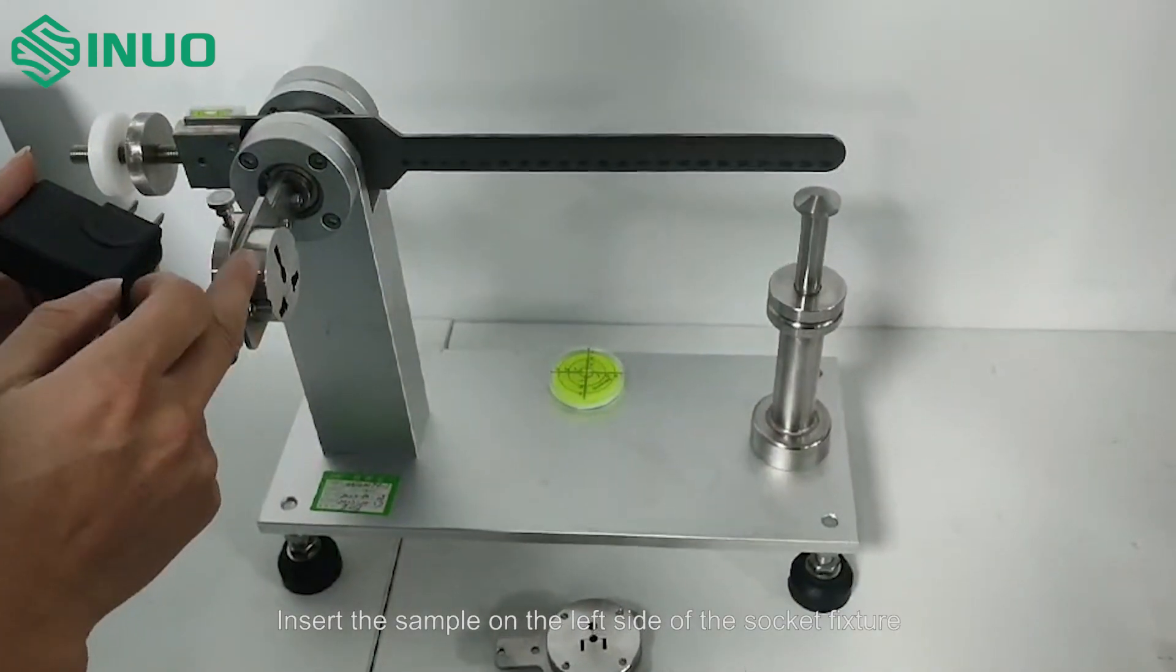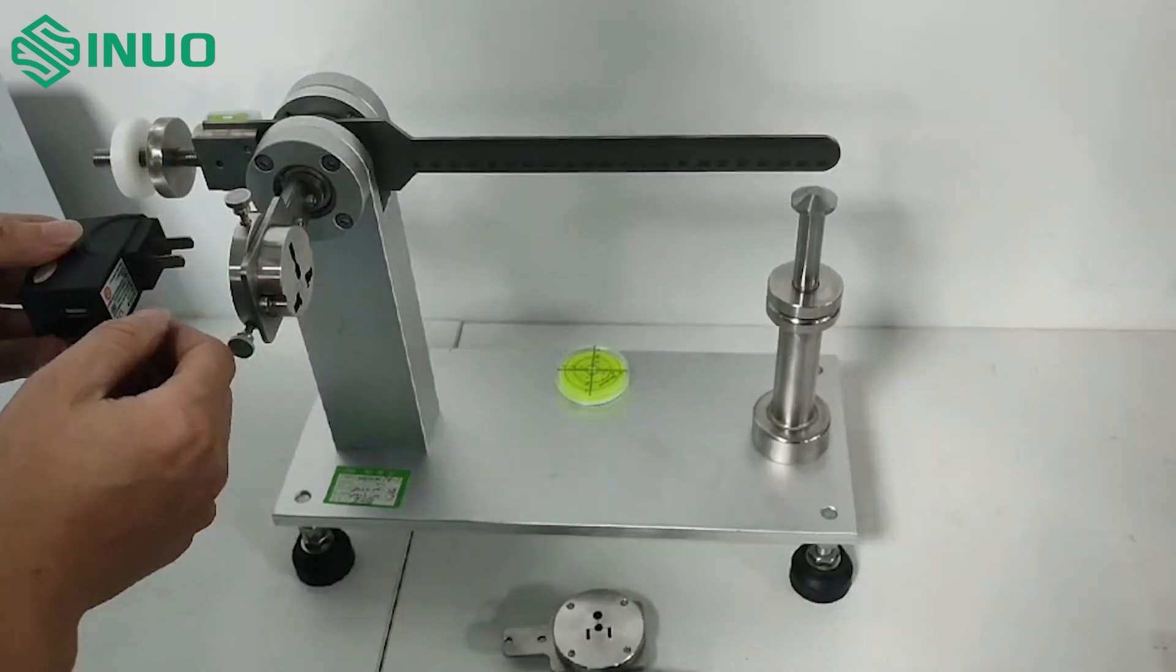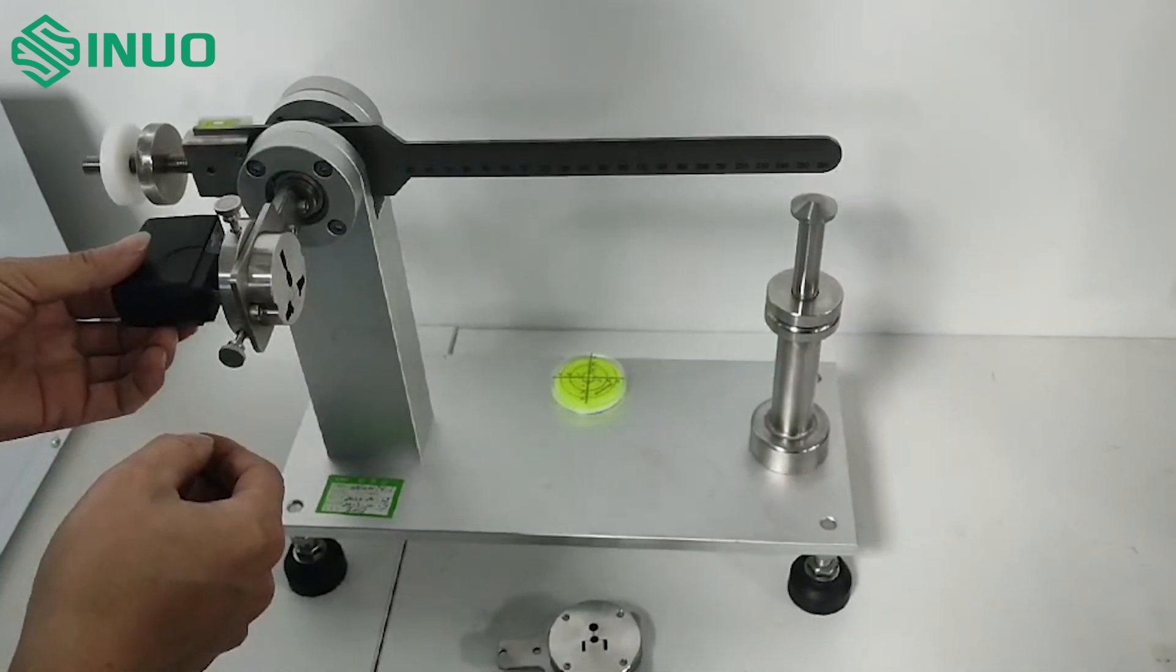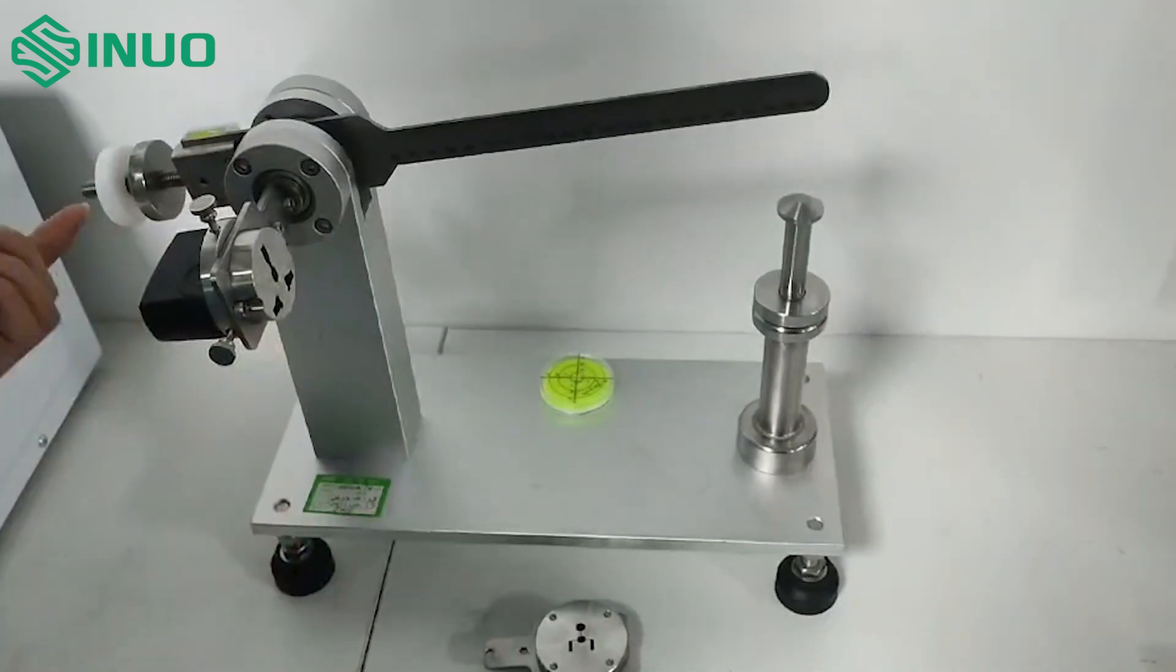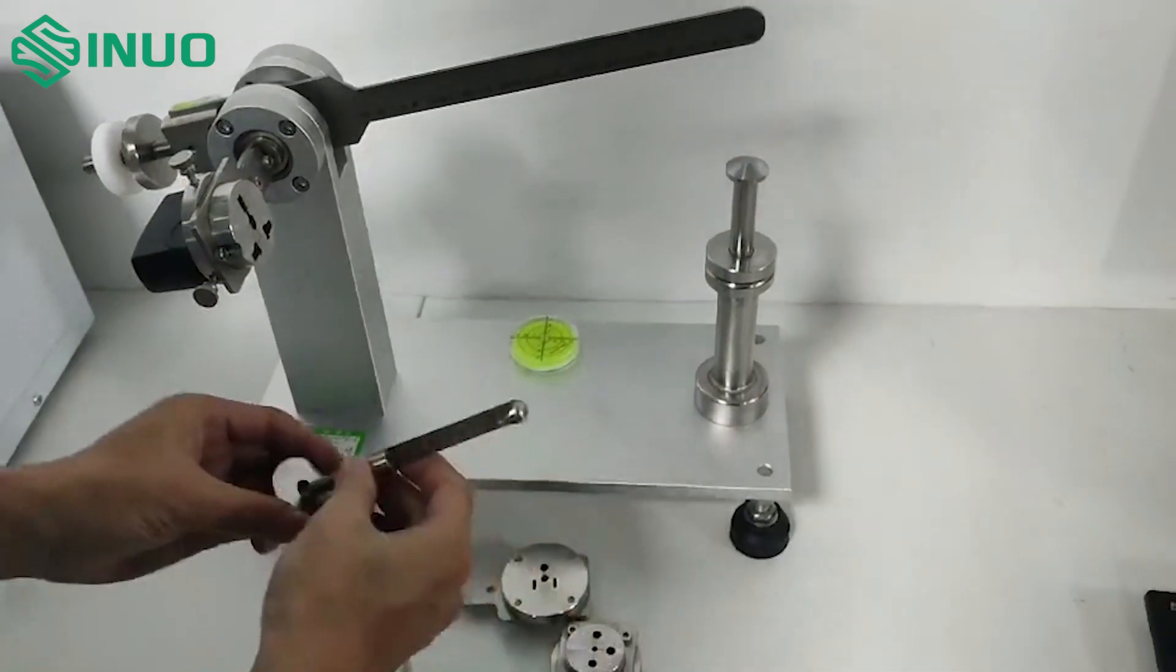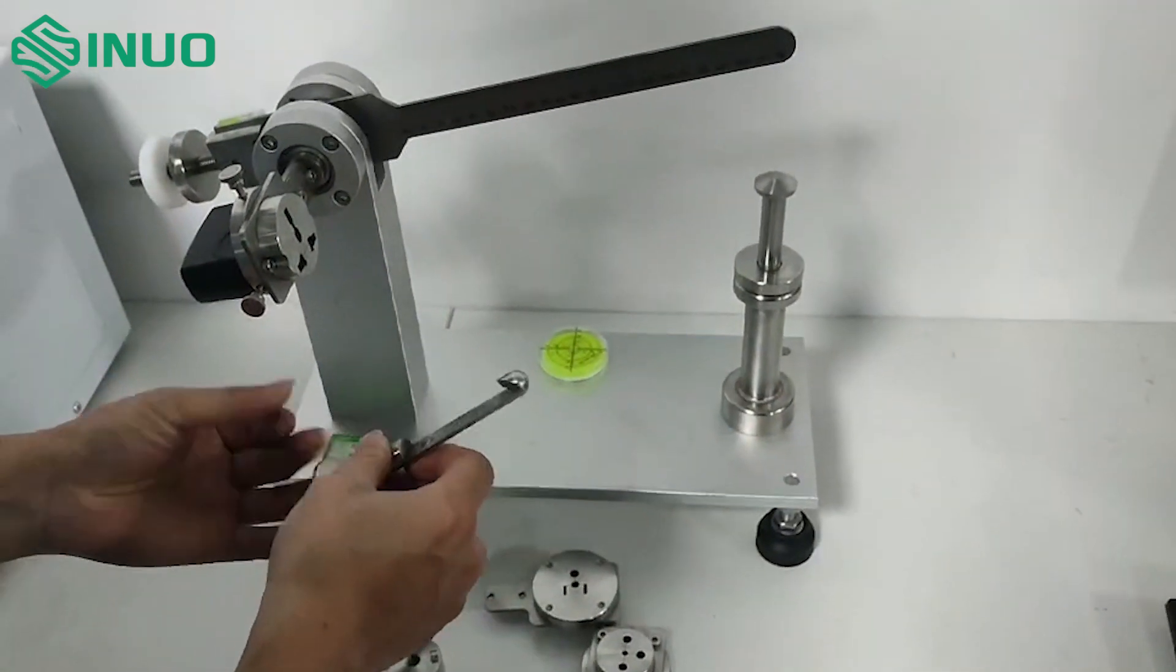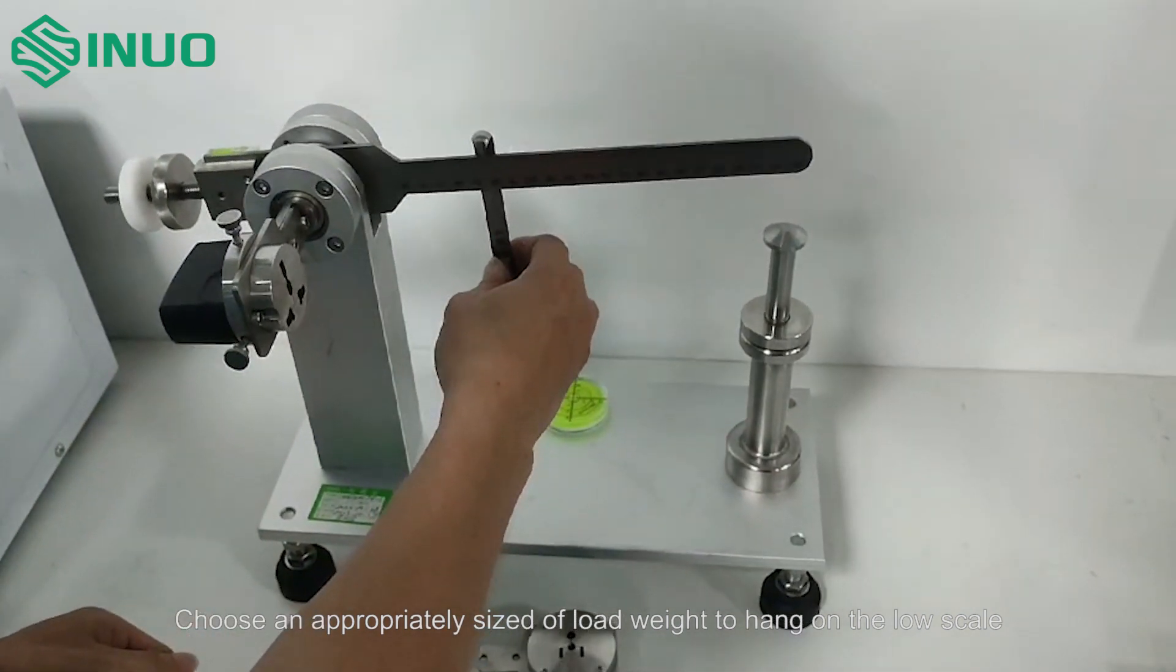If the lamp has bare wires, connect it to the terminal on the middle layer. If the lamp has a plug, connect it to the socket.